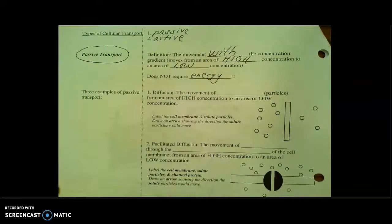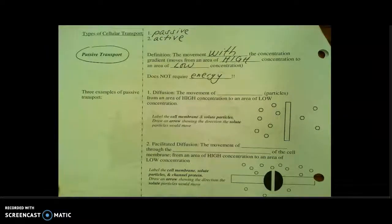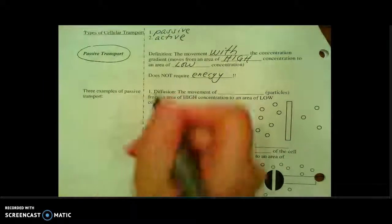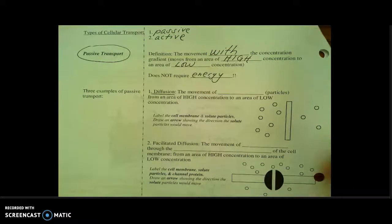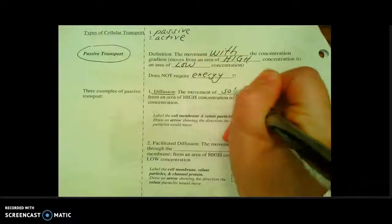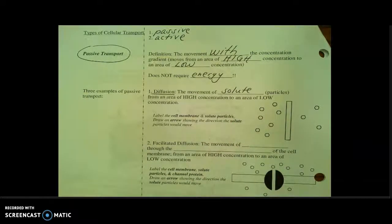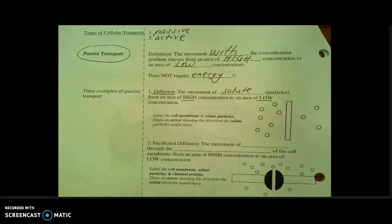Within this broad heading of passive transport, we're going to see three smaller examples. The first main type of passive transport is called diffusion. And this is looking at the movement of solute particles. Again, this is passive, so these solute particles are moving from high to low, just going with the flow.